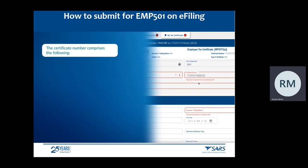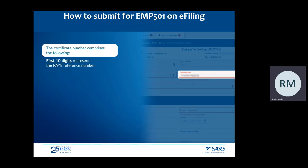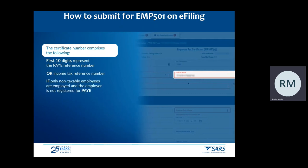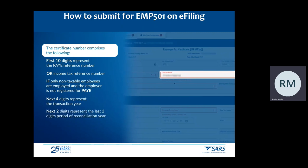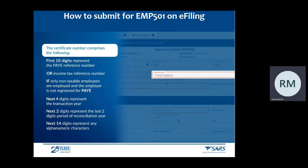The certificate number is a unique 30-digit number allocated to each specific IRP5/IT3A certificate issued by the employer. The certificate number comprises: the first 10 digits equal the PAYE reference number — or alternatively the income tax reference number if only non-taxable employees are employed and the employer is not registered for PAYE. The next four digits equal the transaction year. The next two digits equal the last two digits of the period of reconciliation. The next 14 digits can contain any unique combination of alpha and numeric characters.